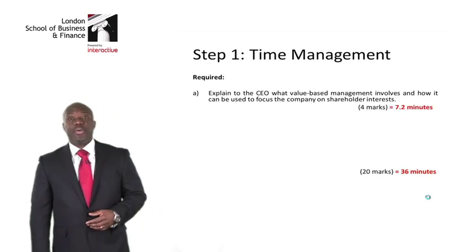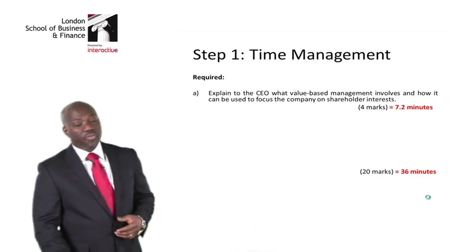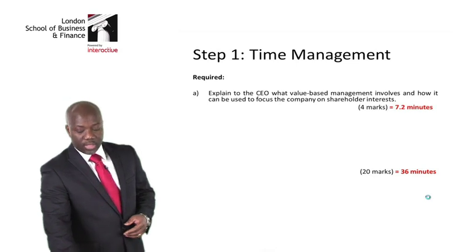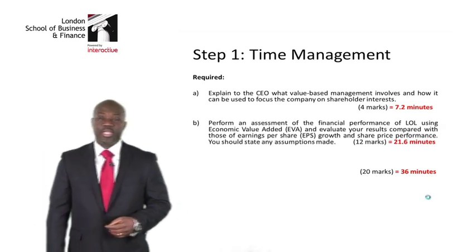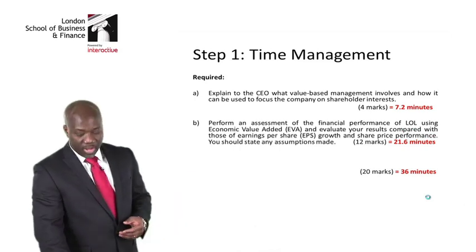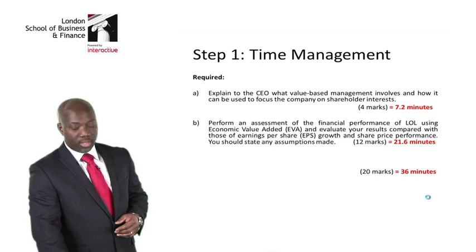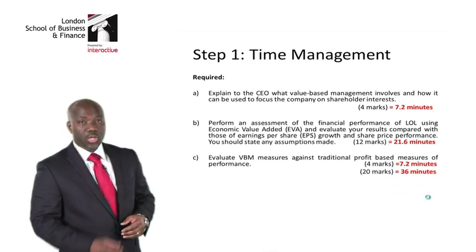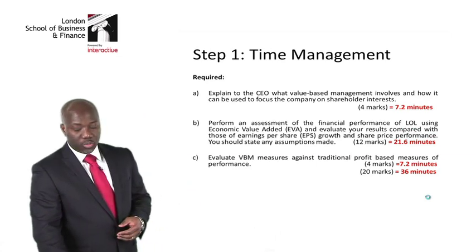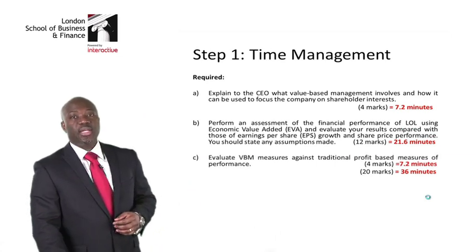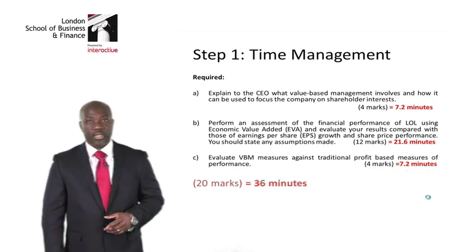For the A part of the question, where we are being given 4 marks, we need to use a total of 7.2 minutes. The B part of the question is for 12 marks — multiplying 12 by 1.8 means we need to spend a total of 21.6 minutes. The C part of the question is also for 4 marks, meaning we need to spend a total of 7.2 minutes. That means for the total of 20 marks, we require 36 minutes.